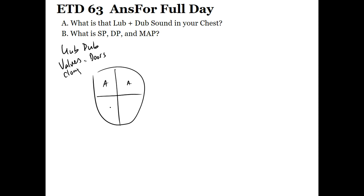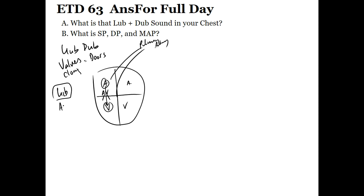The two upper chambers are called atria; the lower chambers are called ventricles. Blood has to come into the atria and then go through a door called the atrial ventricular valve. As the atria contracts, it pushes blood down into the ventricle, which fills up and then sends blood to the lungs via the pulmonary artery. You hear the lub — that's the AV valve slamming shut when the ventricle contracts, preventing backflow and pushing blood out toward the lungs efficiently.